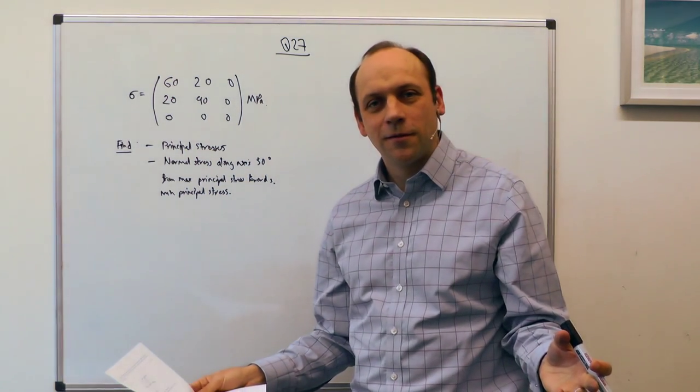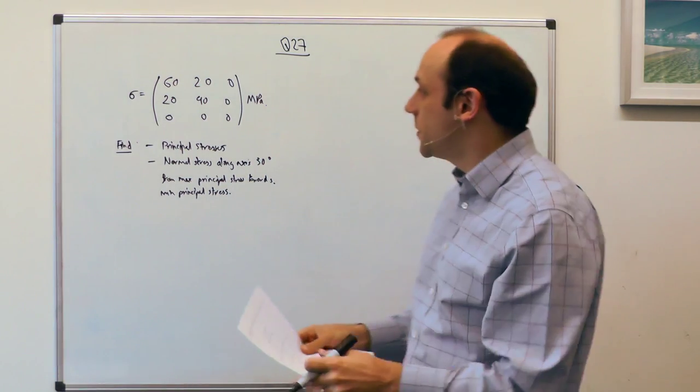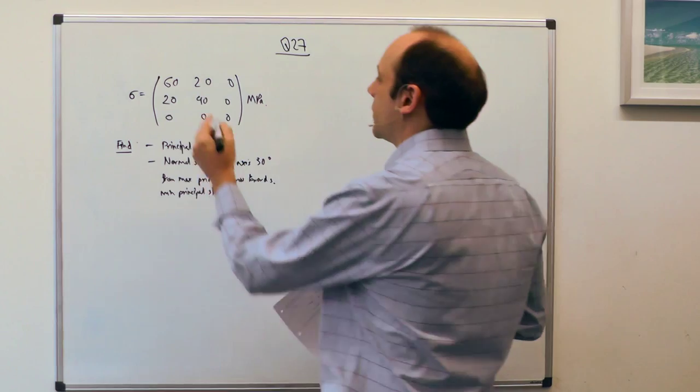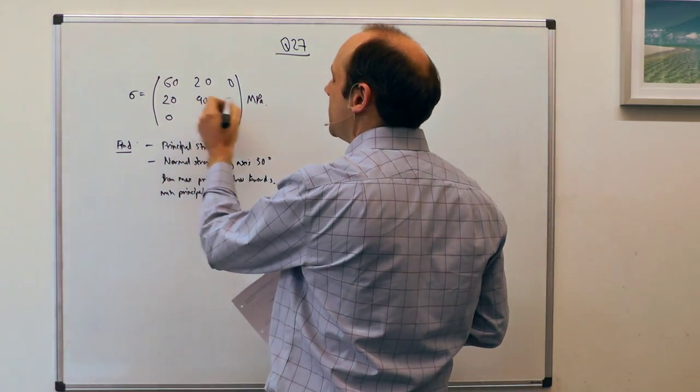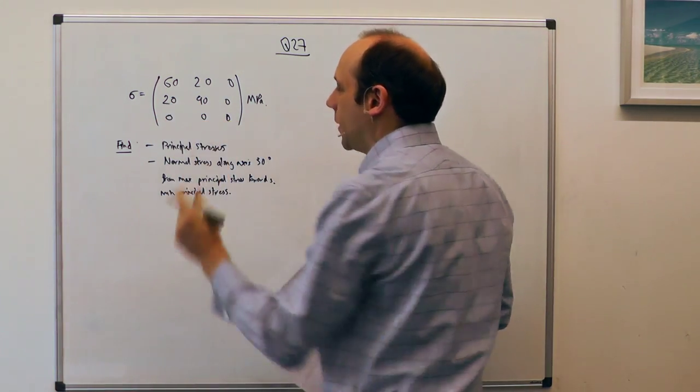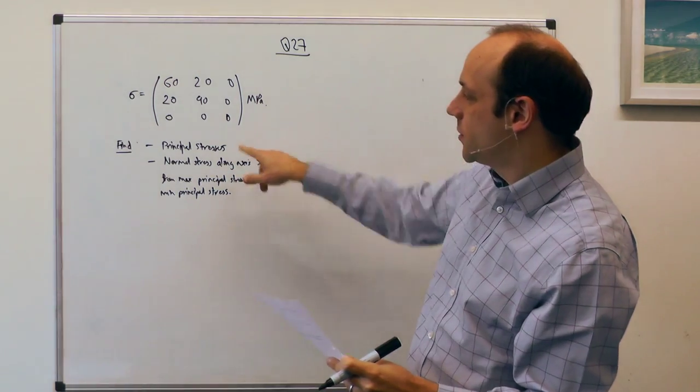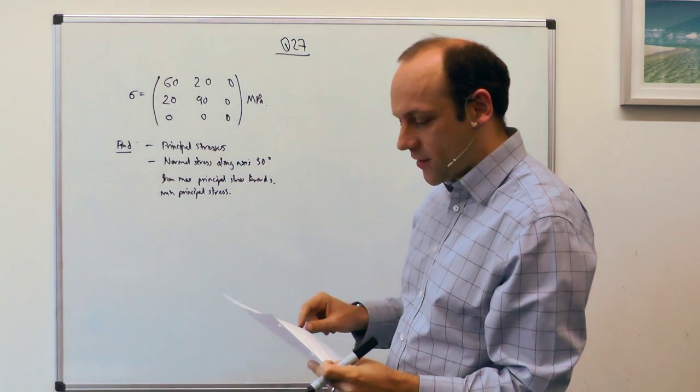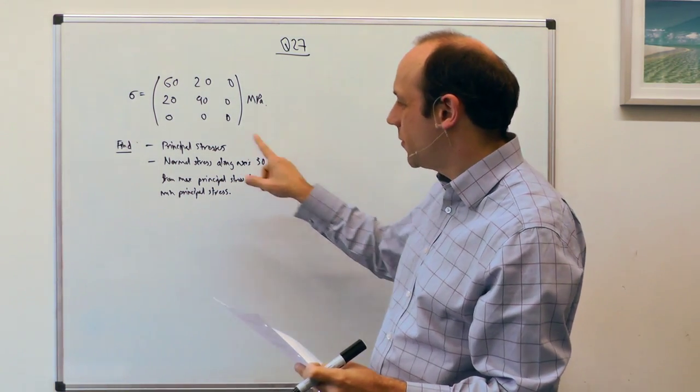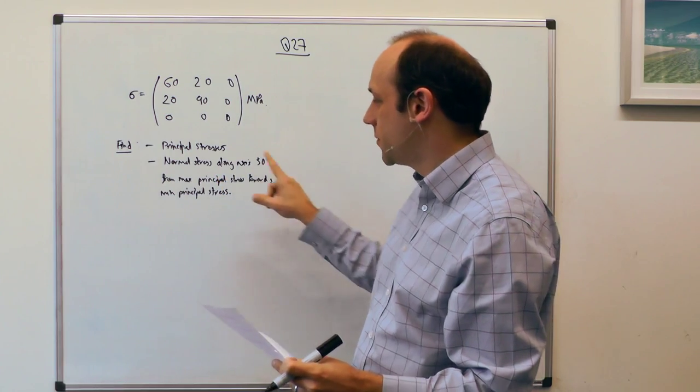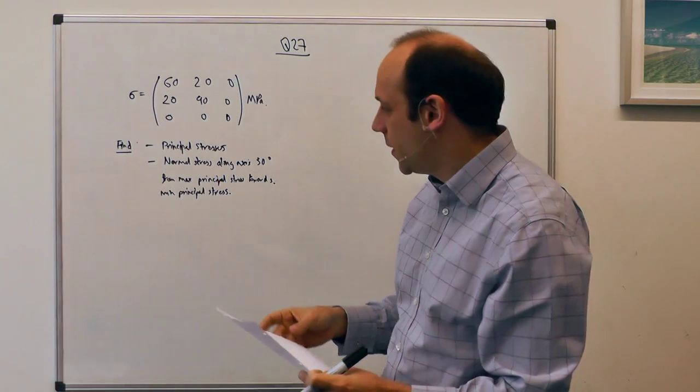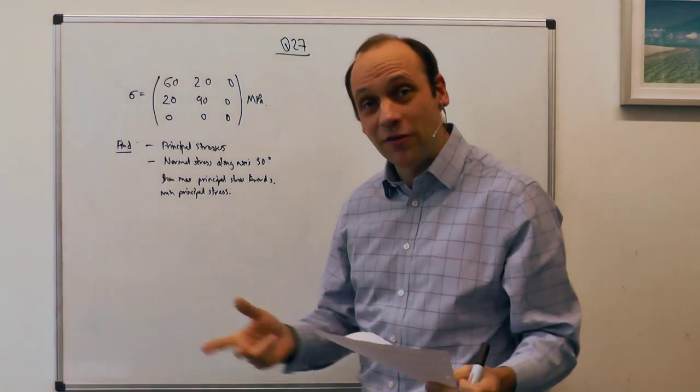Okay, so welcome to question 27. Question 27 gives us this stress matrix: 60, 20, 0, 20, 90, 0, 0, 0, 0, and asks us to find two things: the principal stresses and the normal stress along an axis 30 degrees from the maximum principal stress towards the minimum principal stress. So a rotation about the median principal stress, if you like.